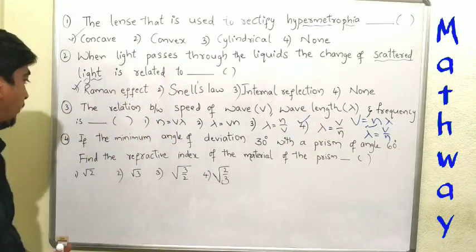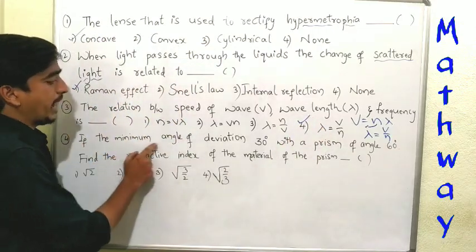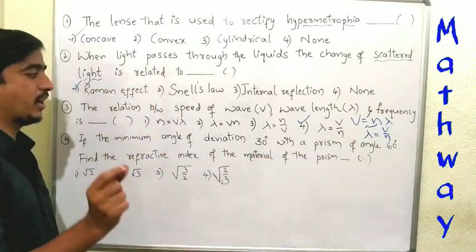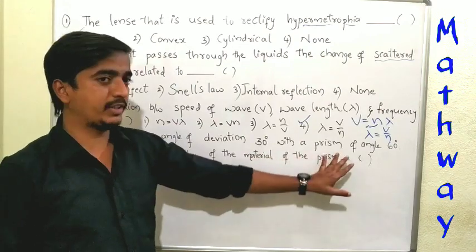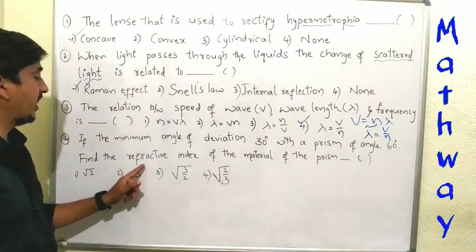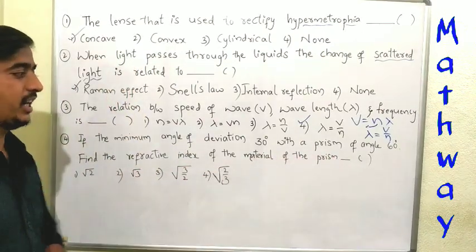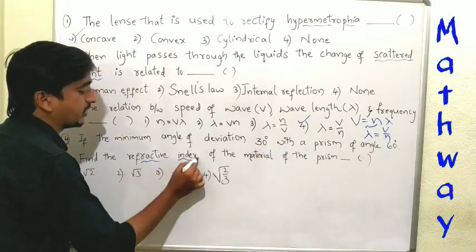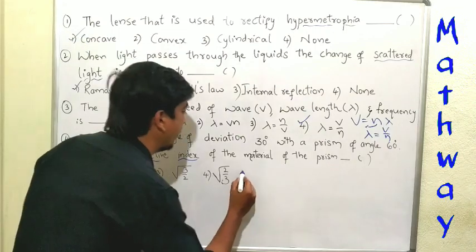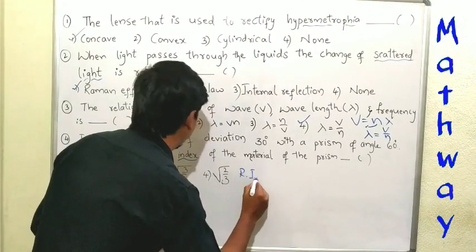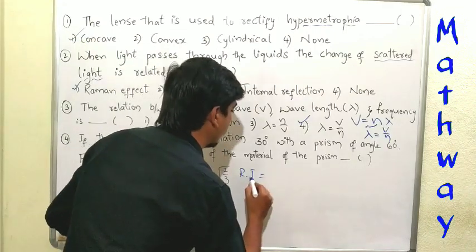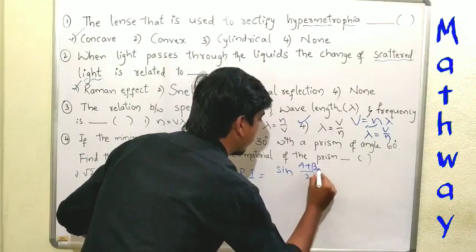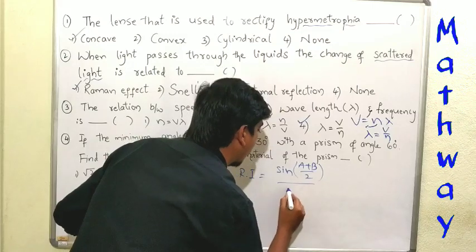Fourth question: the minimum angle of deviation is 30 degrees with a prism of angle 60 degrees. Find the refractive index of the material. So our main point is refractive index. The refractive index formula is: refractive index equal to sin((A plus B) by 2) divided by sin(A by 2).